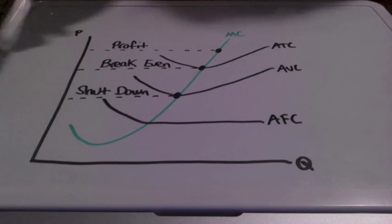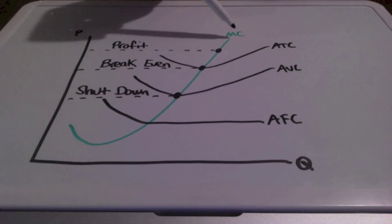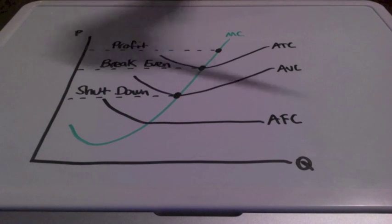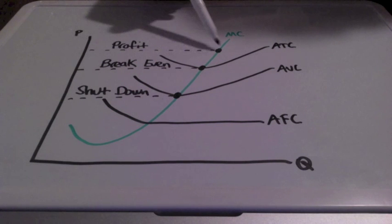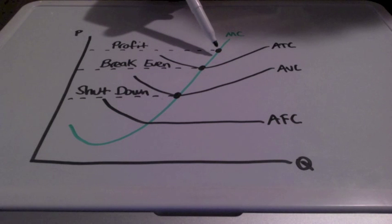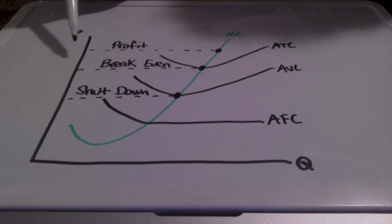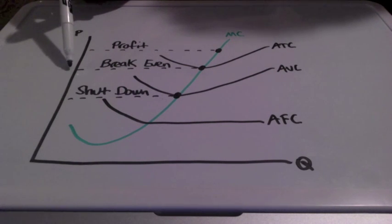The marginal cost curve is the most important cost curve, and different points on the curve will tell us many things about that firm. If our price is at a point above our average total cost, the firm is going to experience what we call a profit. This means the firm is able to charge a price which is higher than the cost to produce that good or service.